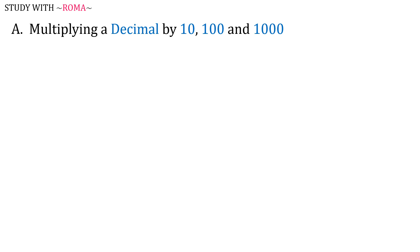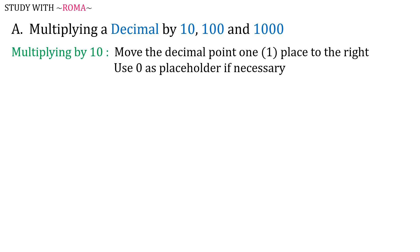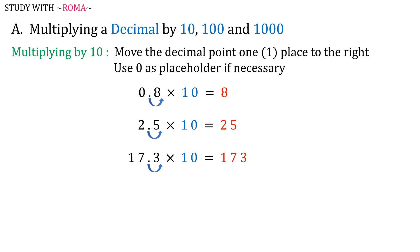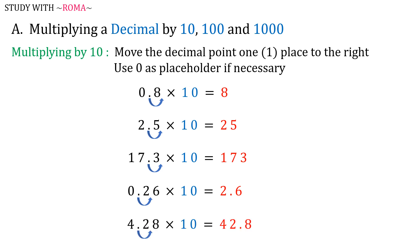For the first part, multiplying a decimal by 10, 100, and 1000. When multiplying a decimal by 10, move the decimal point one place to the right, and use 0 as a placeholder if necessary. For example: 0.8 times 10 is equal to 8; 2.5 times 10 is equal to 25; 17.3 times 10 is equal to 173; 0.26 times 10 is equal to 2.6; and 4.28 times 10 is equal to 42.8.